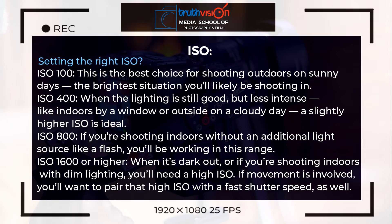ISO 400 can also be used indoors when your subject is near a window as a light source. For ISO 800, I use it mostly indoors with an additional light source to supplement the ambient light — either a flash, flood lights, or speedlight, for example when shooting a film. I then adjust the shutter speed and aperture accordingly. When you find me using ISO 1600 or higher, it's when lighting is very low.